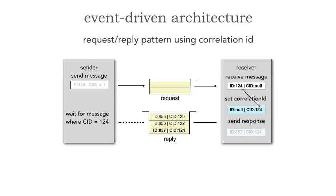That response goes into the reply queue. I'm doing a blocking wait for that specific correlation ID, and there it is — number 124 — with the receiver's message ID of 857. I then get my specific first name for that customer.